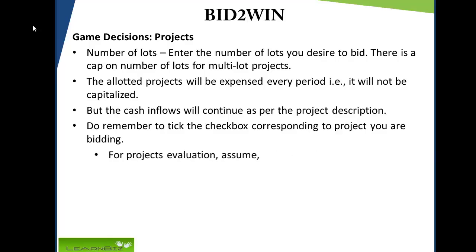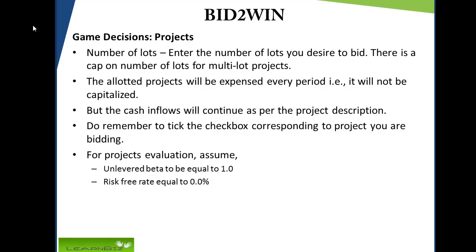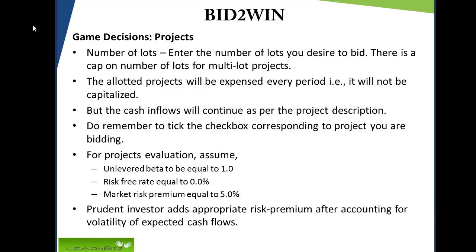For project evaluation, assume unleveraged beta to be equal to 1, risk-free rate equal to 0%, and market risk premium equal to 5%. A prudent investor adds appropriate risk premium after accounting for volatility of expected cash flows.